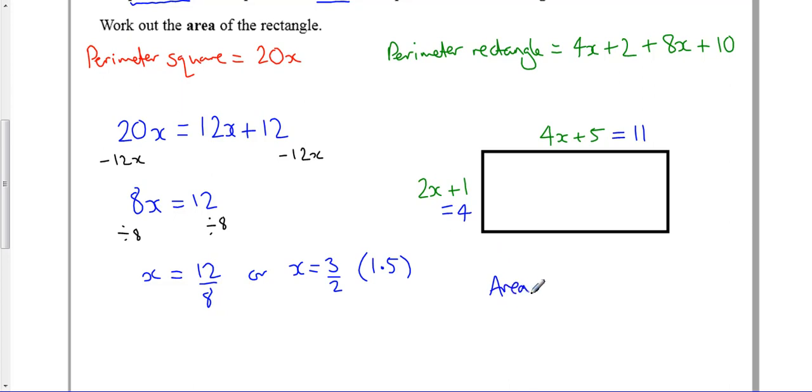So to find the area of the rectangle, we do 4 times 11, which is 44 cm².